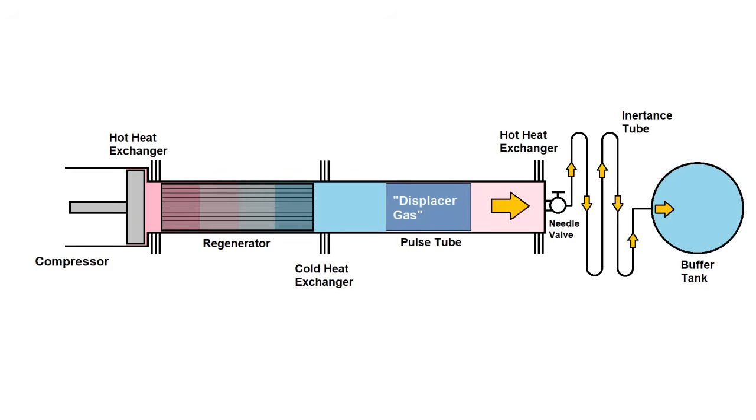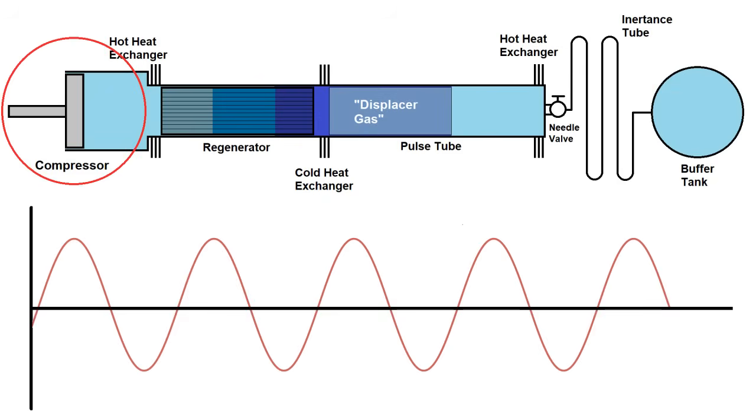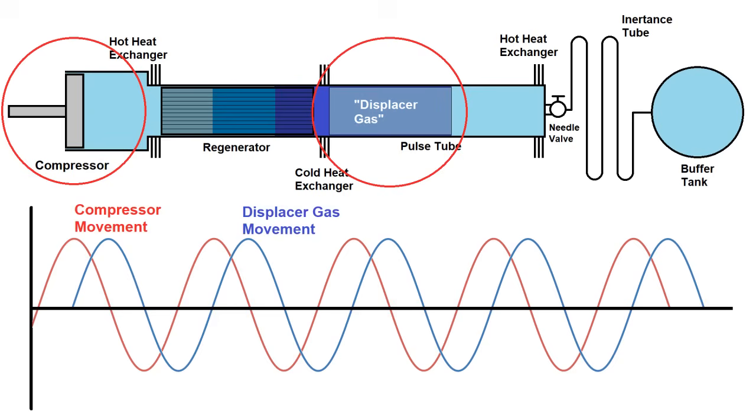This pressure causes the gas in the right side of the tube to accelerate through the needle valve and into the buffer tank. Now the compressor moves back and starts expanding the gas but the displacer gas is still moving to the right from its momentum so a net cooling effect occurs before the displacer gas can make it back to the other side of the pulse tube. If this is the compressor movement and thus pressure this is what the movement of the displacer gas would look like in the pulse tube. The combination of the so-called inertance tube and buffer tank creates a phase shift that causes gas flow to lag behind pressure by around 60 to 90 degrees which is about the same phase shift as a displacer piston would have in a Sterling cycle cooler.